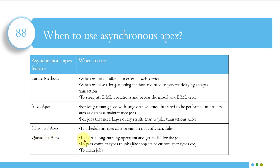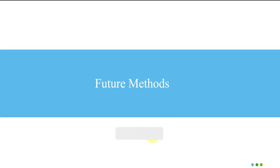For queueable apex, use it to start long-running operations and get an ID to track the job. Queueable apex gives us the ability to get the job ID and monitor it. It also supports passing complex types like objects or custom apex types. Don't worry too much about this right now — once we finish all eight videos of this asynchronous apex series, come back to this question and it will make more sense.